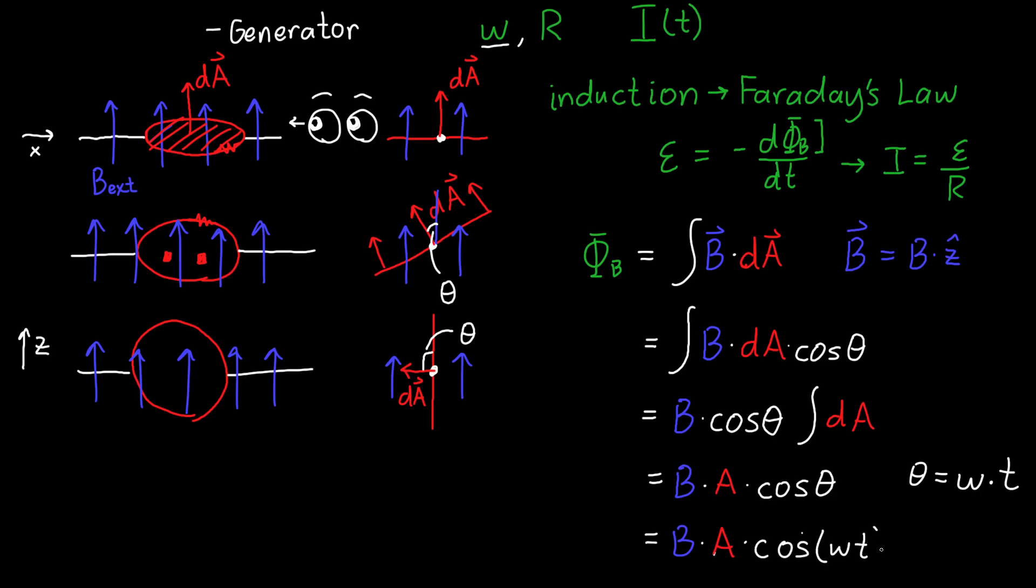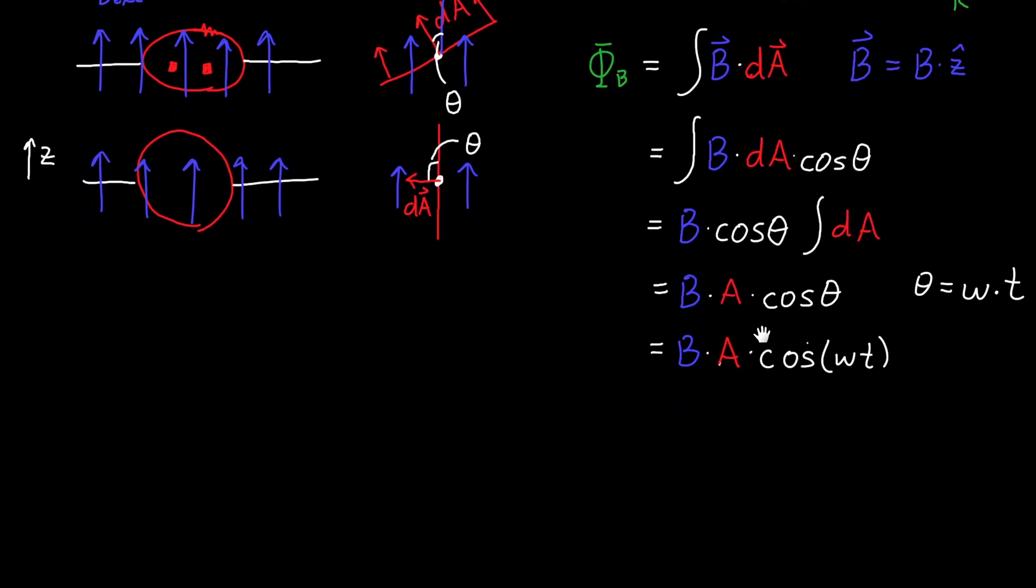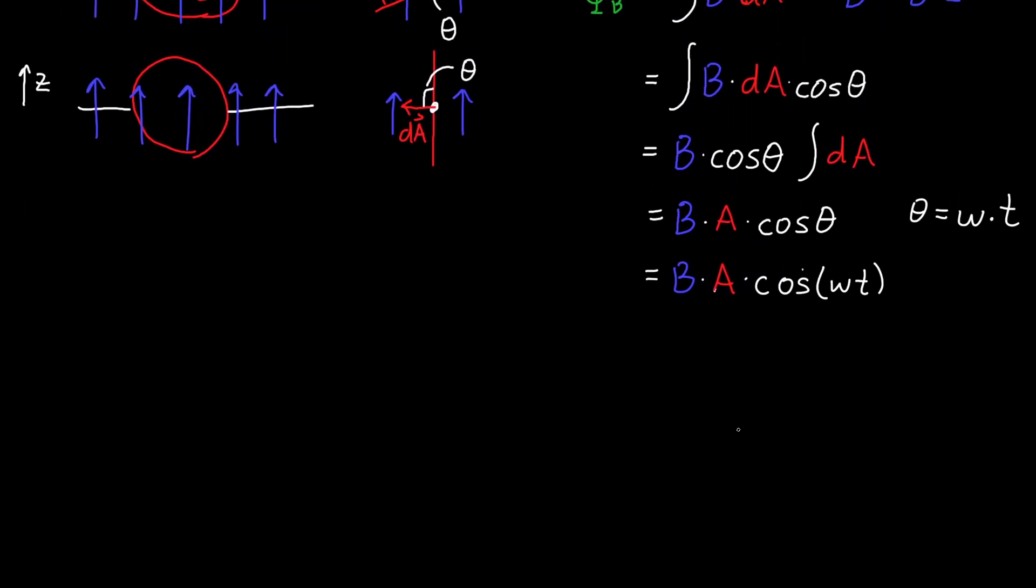And now we can take the derivative of this, the time derivative. So if we do that, we want d/dt of our magnetic flux, which is B times A times cosine of omega t. Now B and A are both constants. They don't change as a function of time, so we can pull them out of this derivative.